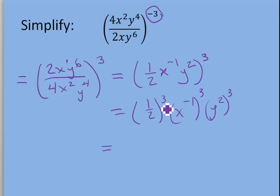And when I have 1 half to the 3rd power, it's really the same as raising 1 to the 3rd power over 2 to the 3rd power. So 1 to the 3rd power is just going to be 1. 2 to the 3rd power is equal to 8.